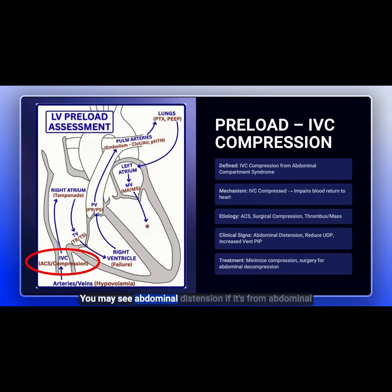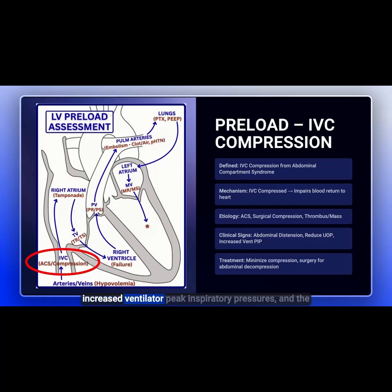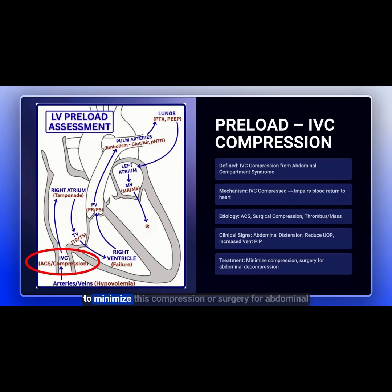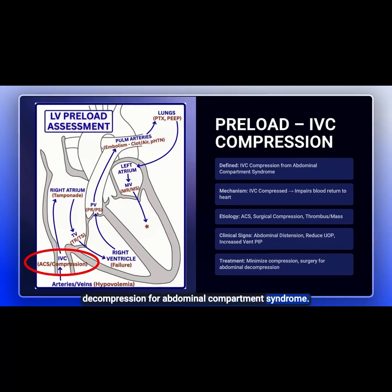You may see abdominal distension if it's from abdominal compartment syndrome, reduced urine output, and increased ventilator peak inspiratory pressures. The treatment really depends on the cause, but it could be to minimize the compression or surgery for abdominal decompression in cases of abdominal compartment syndrome.